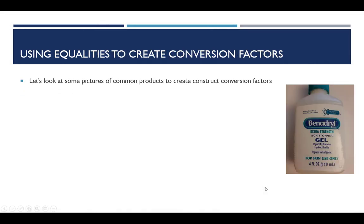So let's construct some conversion factors from just some common household products that we might find. So here is some Benadryl gel that you would use, for example, with mosquito bites. And we see at the bottom that it contains 4 fluid ounces, which is the same as 118 milliliters. And so that gives us this equality right here: 4 fluid ounces equals 118 milliliters.